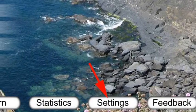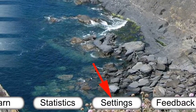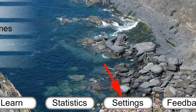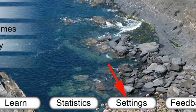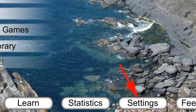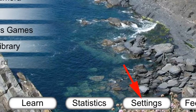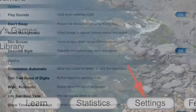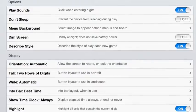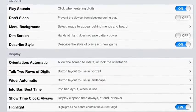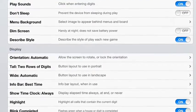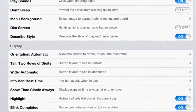At the bottom of the screen, find the settings button and touch that button to get the settings display. The third item on the settings display is the menu background. Touch the arrow at the end of that item.